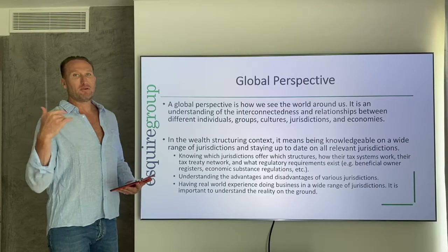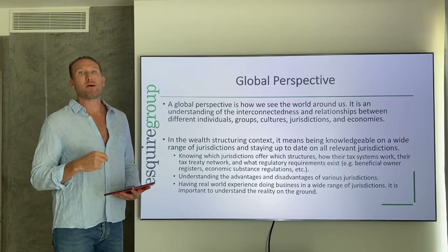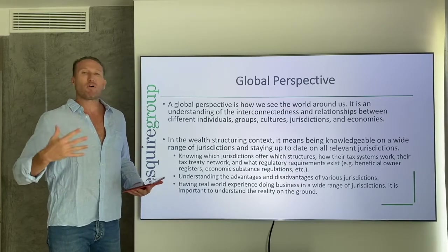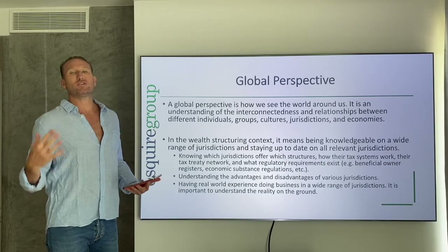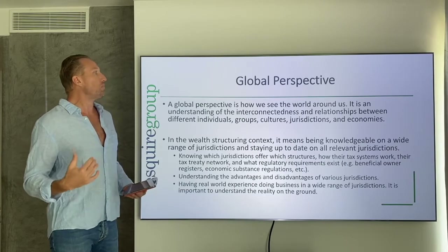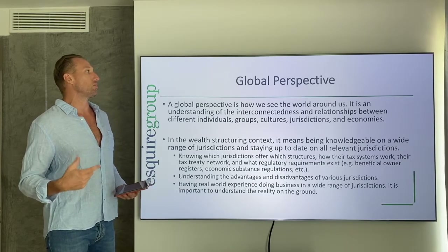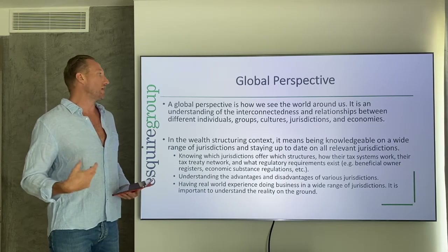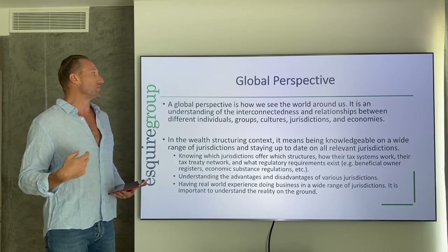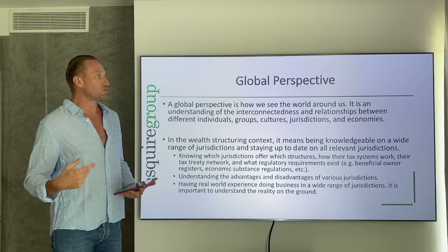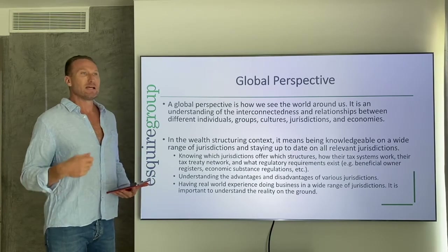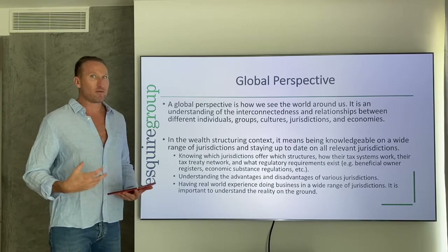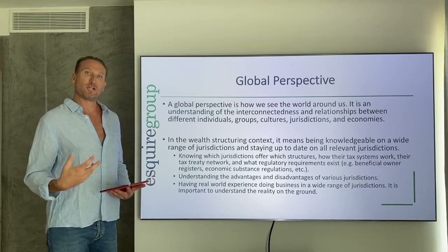I'm going to read a little bit more from my iPad than I usually do because I want to get some of this verbiage right. First of all, what is a global perspective? A global perspective is how we see the world around us — an understanding of the interconnectedness and relationships between different individuals, groups, cultures, jurisdictions, and economies. That's very important in trying to understand multinational families and multinational business, but how exactly does that translate into wealth structure?